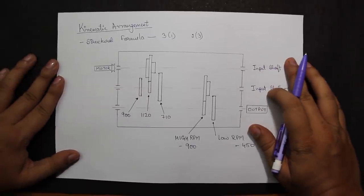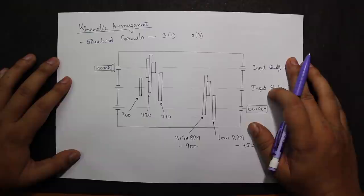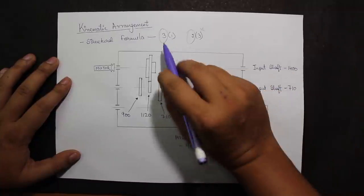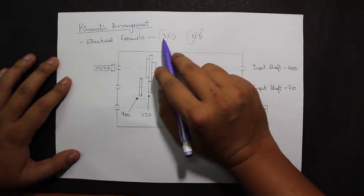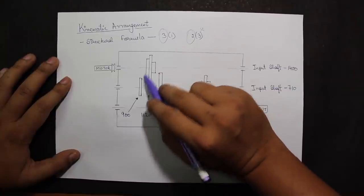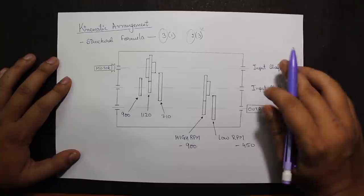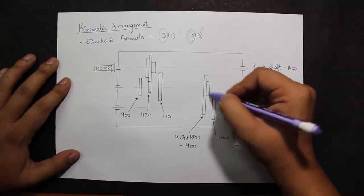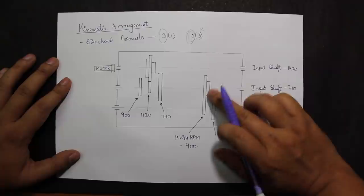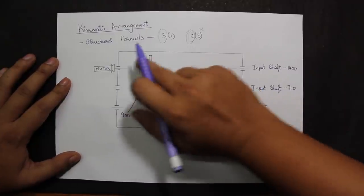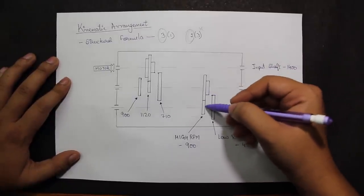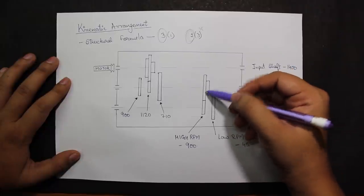After completing the ray diagram it is time to make the kinematic arrangement. Here we look at the number outside the bracket of the structural formula, not the number inside. There are three vertical lines in the ray diagram, corresponding to three shafts: shaft 1, shaft 2, and shaft 3. The structural formula shows 2 gears, so a compound gear arrangement is made with two gears on one side and the remaining gears on the other.